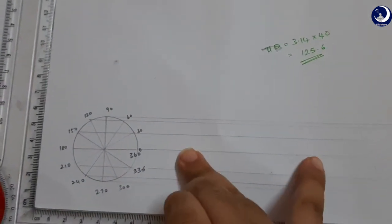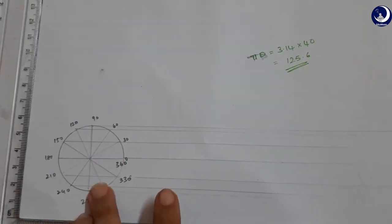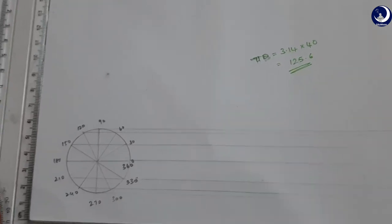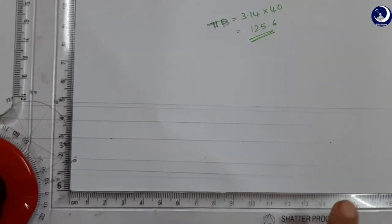You have to mark that and divide that into this many number of parts. So here we divided it into 12 parts. That circumference also we will divide it into 12 equal parts. So I marked the circumference.